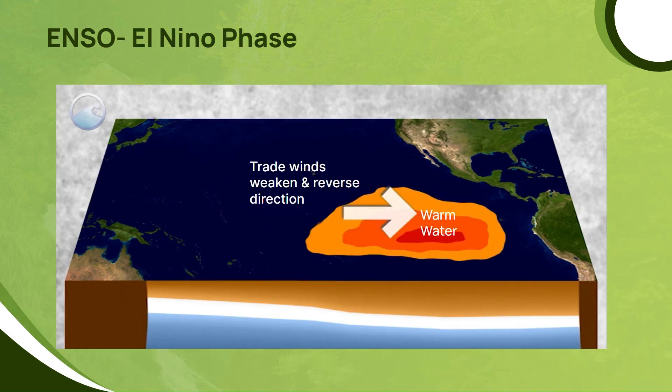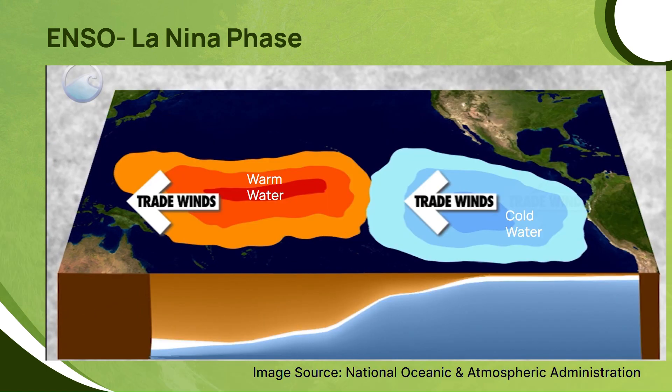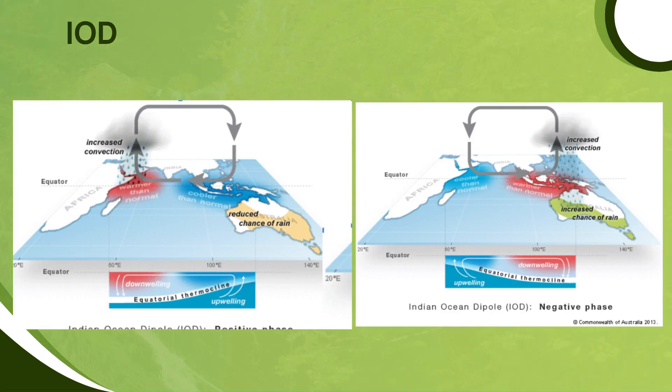This warm water appears in the southern Pacific Ocean near the South American coast, as opposed to the Asian coast. This is known as El Niño. When the trade winds become stronger in the western direction, it is known as La Niña.